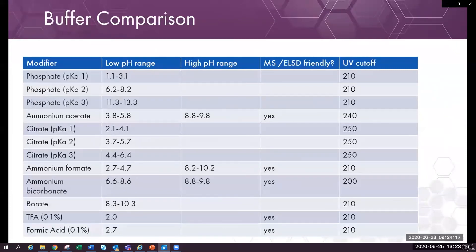TFA, formic acid, and acetic acid can be added to both the A and B solvents. Depending on the concentration, the UV cutoff may not be bad. In other words, it might not hide your compound.